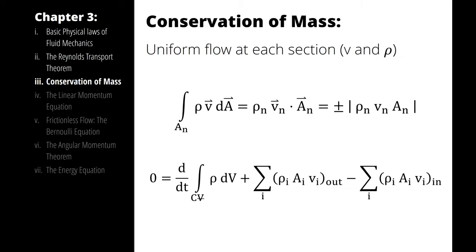If I have uniform flow at each section, where the velocity is the same everywhere across the orifice — the same in the center as toward the edges — then I can simplify the integral by writing density times velocity times area. That term is either positive or negative depending on whether it's an inlet or an outlet. This means I can write conservation of mass as: 0 equals the time rate of change of the integral of density with respect to volume, plus the summation of density times area times velocity for outlets, minus the summation of density times area times velocity for inlets.